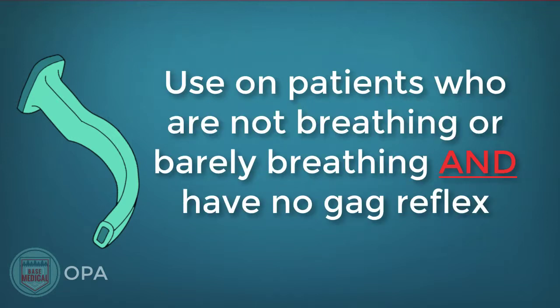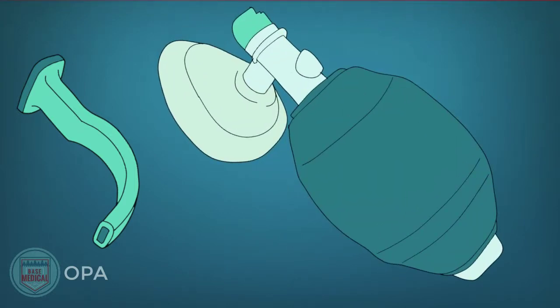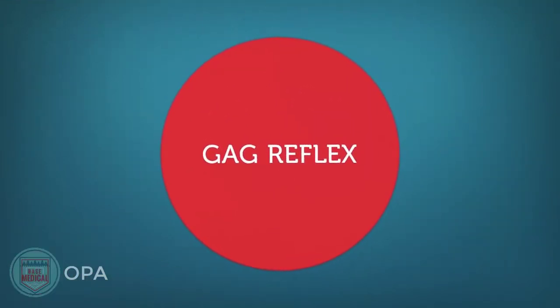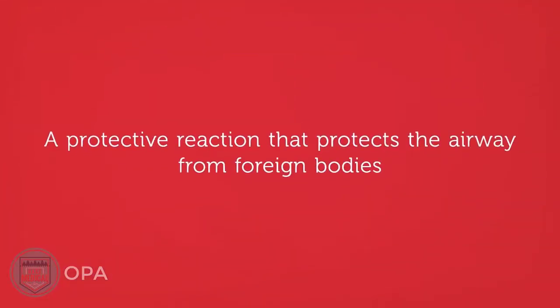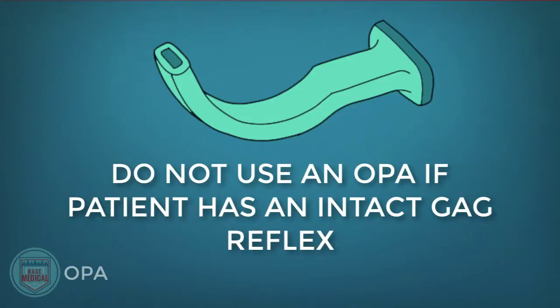Use an OPA on patients who are not breathing, or barely breathing, or who have no gag reflex, and whenever a BVM is used. The gag reflex is a protective reaction that prevents foreign bodies from entering the airway. If activated, the patient will vomit. If you are inserting an OPA and the patient begins to vomit, immediately remove the OPA and log roll the patient to the side to clear the airway of any vomit. Suction the airway if a suction unit is available.